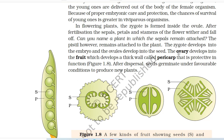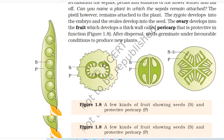In flowering plants, the zygote is formed inside the ovule. After fertilization, the sepals, petals and stamens of the flower wither and fall off. The pistil, however, remains attached to the plant. The zygote develops into the embryo and the ovules develop into the seed. The ovary develops into the fruit, which develops a thick wall called the pericarp that is protective in function. After dispersal, seeds germinate under favorable conditions to produce new plants.